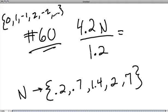Multiply everything by 10, numerator and denominator. Then what we get is 42 times N over 12. This is a lot nicer to deal with because we can reduce this - 12 and 42 have common factors.